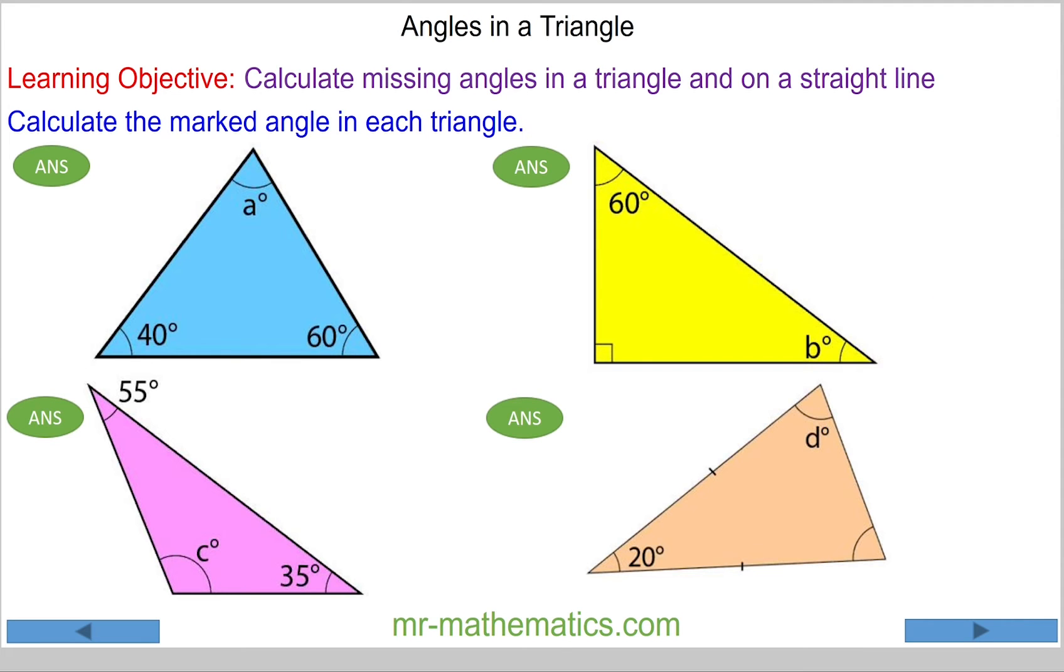Hello, in this lesson we're going to calculate missing angles in a triangle using the fact that angles in a triangle add up to 180 degrees. So angle a plus 40 degrees plus 60 degrees will equal 180 degrees.